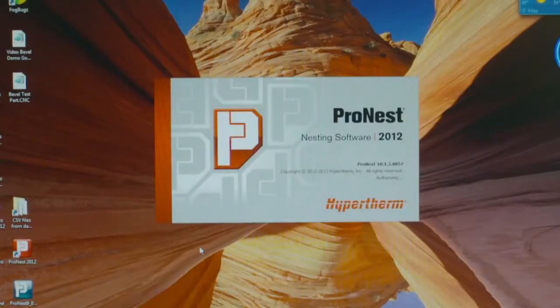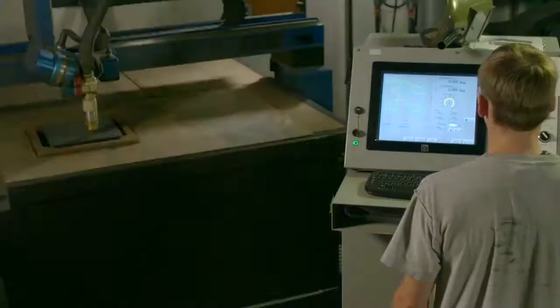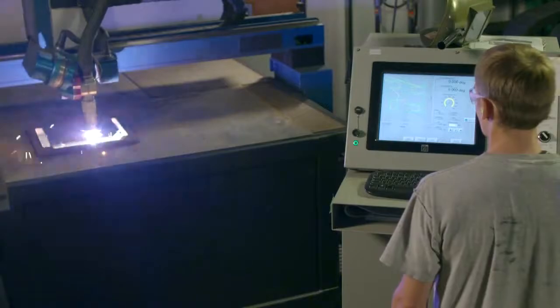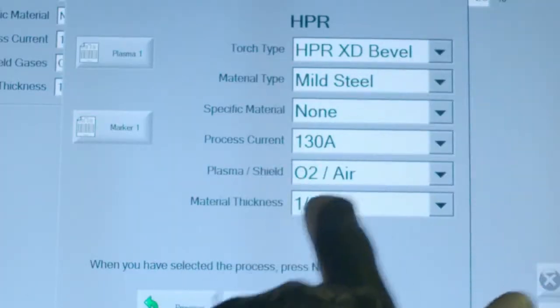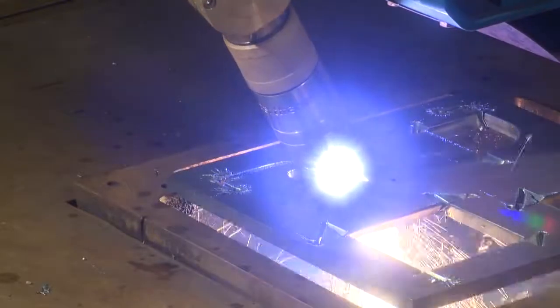Now, we use Hypertherm's ProNest and a cutting machine equipped with Hypertherm's CNC with built-in height control. But you don't have to. The only thing you need to have is Hypertherm's HPRXD plasma system. True bevel will still work with other manufacturers' components.